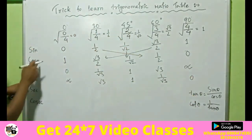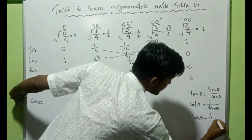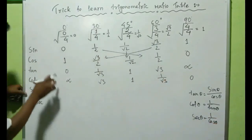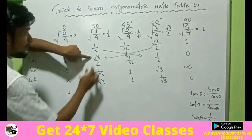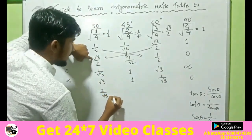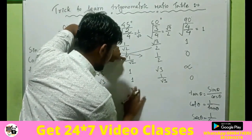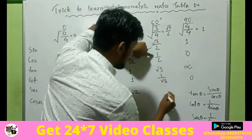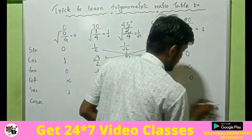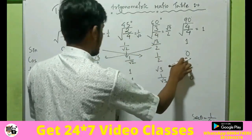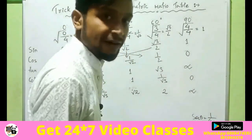Now sec. Sec theta means the reciprocal of cos theta. Reciprocal of 1 is 1; reciprocal of root 3 by 2 is 2 by root 3; reciprocal of 1 by root 2 is root 2; reciprocal of 1 by 2 is 2; and reciprocal of 0 is infinite.